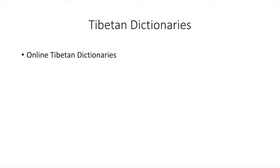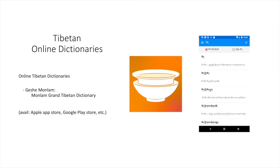In addition to these traditional lexical resources, it is worth mentioning that there are some electronic and online Tibetan dictionary resources as well, with their own strengths and weaknesses. The most significant of these is the Munlam Dictionary, compiled under the direction of Geshe Munlam from Sera Mey Monastic University in South India, and available for desktop computers and mobile devices in both the Google Play and Apple App Stores. The dictionary consists of a progressive intelligent search function with explanatory definitions and examples, and is on the whole carefully curated and well-constructed.